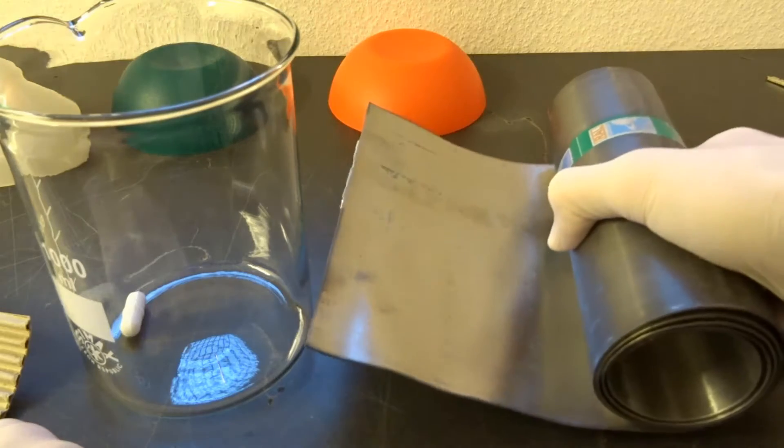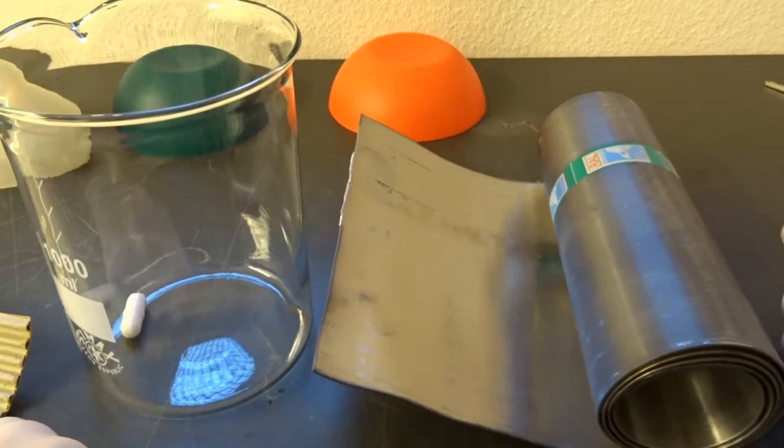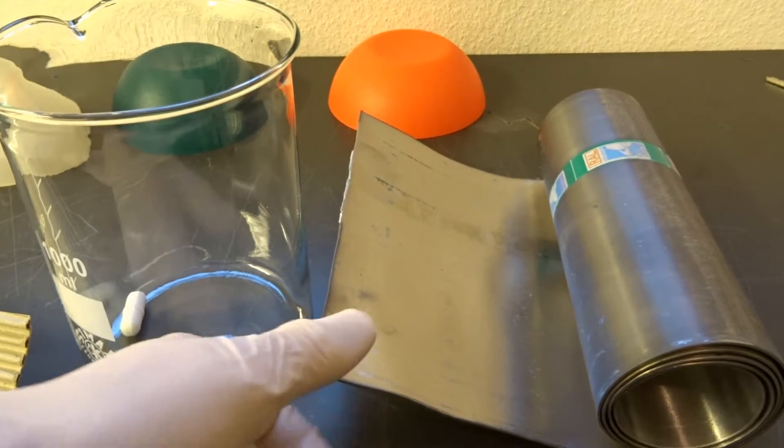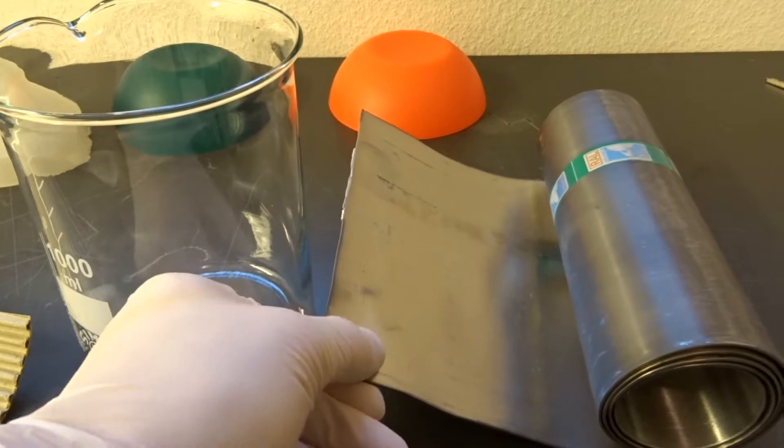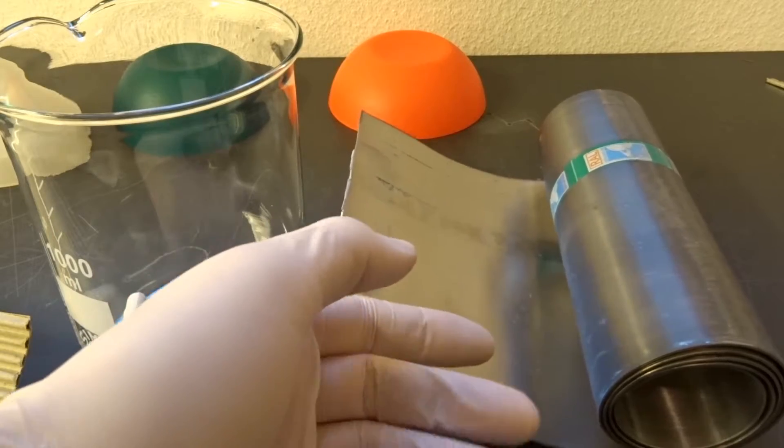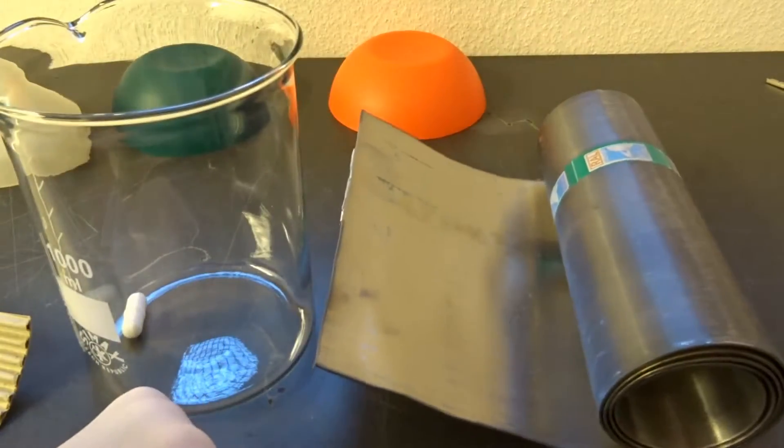Believe it or not, this little roll here is around three kilograms, so it's really a super dense metal. This is lead roofing, and it's pretty good in thickness and height already.